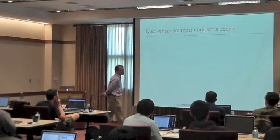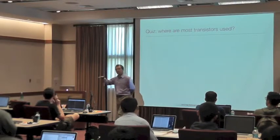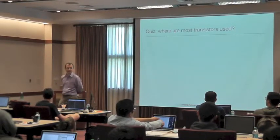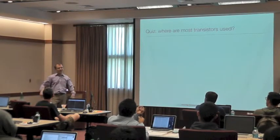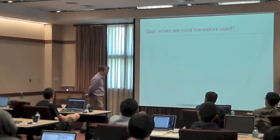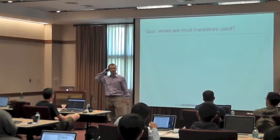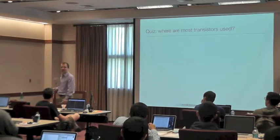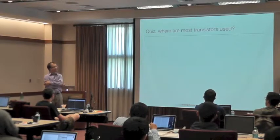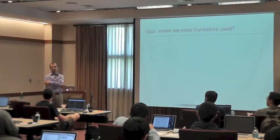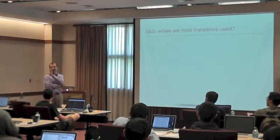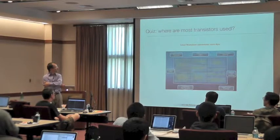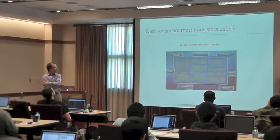Now let's talk about what else, besides arithmetic logic units and memory, is on silicon. Whenever you see media releases by Intel and AMD, they say they have hundreds of millions of transistors on a silicon chip. Where do most of those transistors go? Memory is a good guess — and indeed, most of it goes into memory and other things like the execution units.